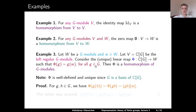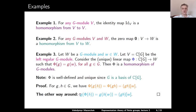Proof: let g and h be elements in G. Then Φ applied to g·h — where the action of g on h is left multiplication — equals Φ(gh), which by definition is gh applied to w. On the other hand, if we act by g on Φ(h), which is h·w, we get g·(h·w) = (gh)·w, which is the same. So this proves that Φ is a homomorphism of G-modules.